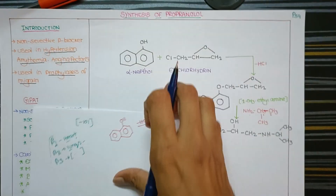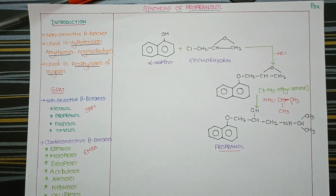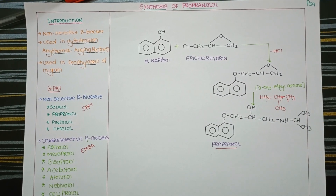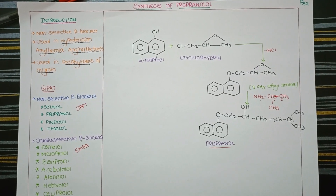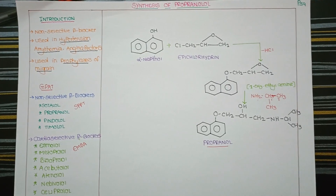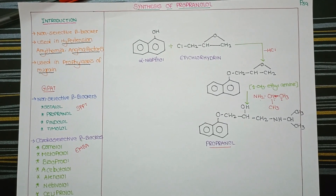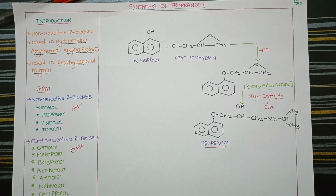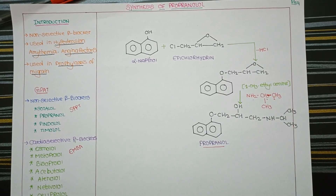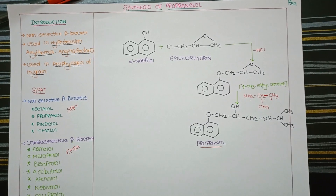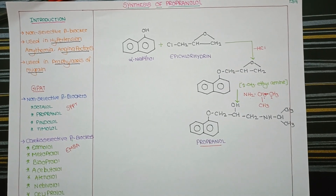In summary, propranolol is a non-selective beta blocker that blocks beta-1, beta-2, and beta-3 receptors. It is used in the treatment of angina, asthma-related conditions, angina pectoris, and also for the prophylaxis of migraine. Prophylaxis means preventive treatment of a disease.